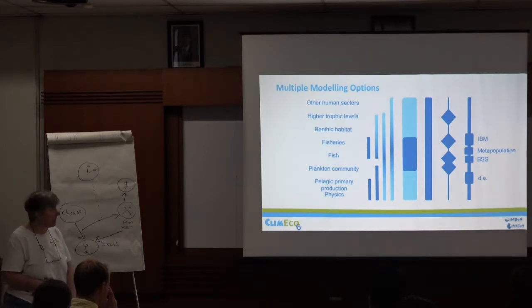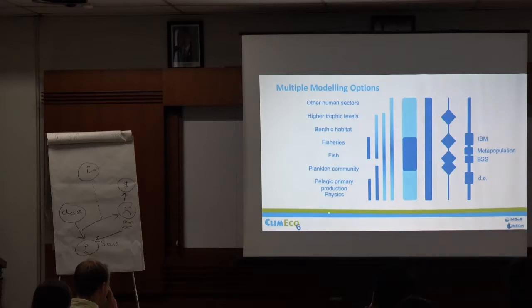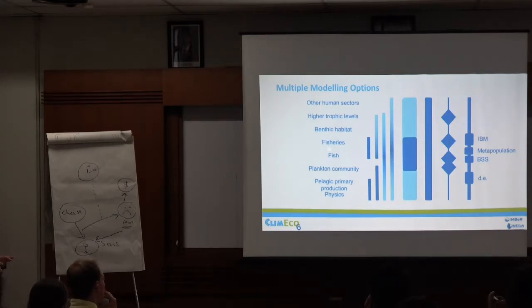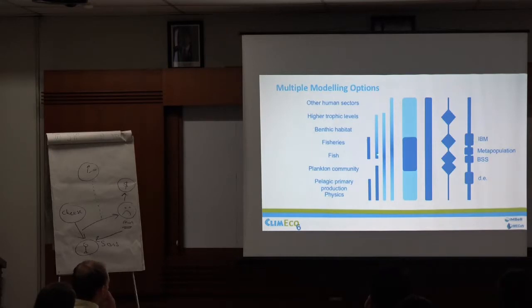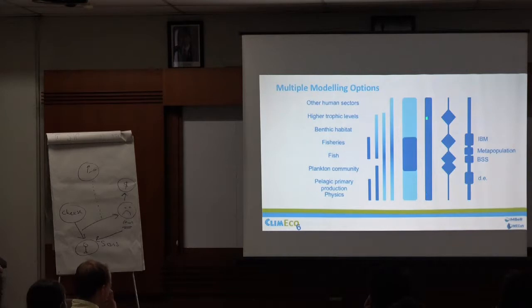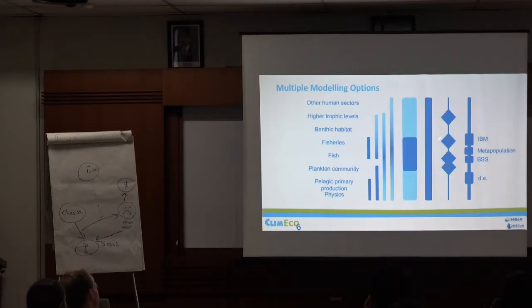When I started modelling decades ago, the primary production part of the world didn't talk to the fish and fisheries part. Those two models can still be used standalone, but through time there have been more and more attempts to link them. In some instances a lot of focus goes on one part with just a little forcing for the others; in other cases equal effort goes into all parts — sometimes even-handed, sometimes with key parts given a lot of detail and simple linkers in between.